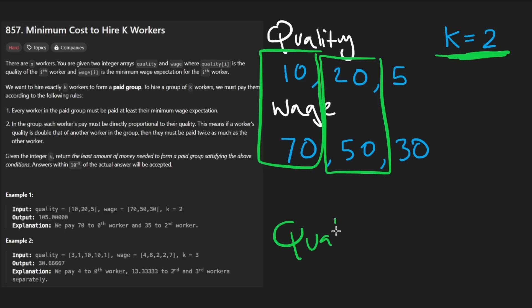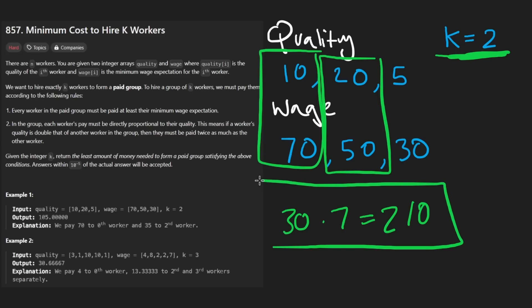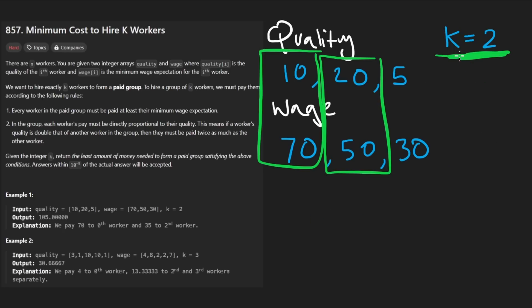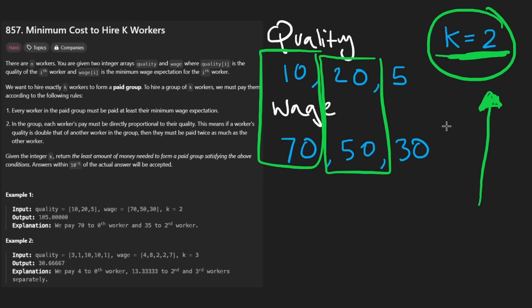Let's assume we have a separate variable which tracks the total quality. So we have right now 30 times seven, which is going to be 210. Now the only question we have is: do we have a way to brute force this? Do we have a way of making sure we only have two people as part of the group we're hiring and that it's going to be optimal? Can we brute force that? Let's think about it.